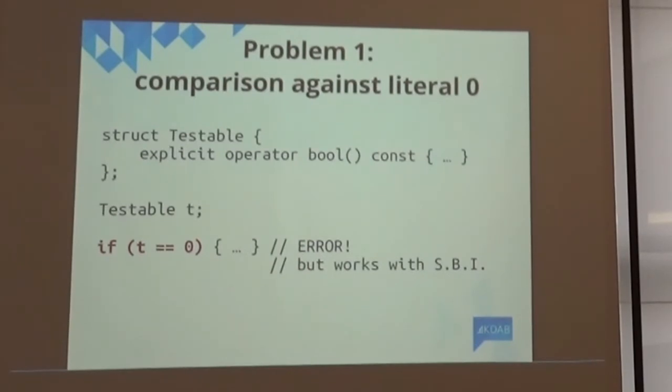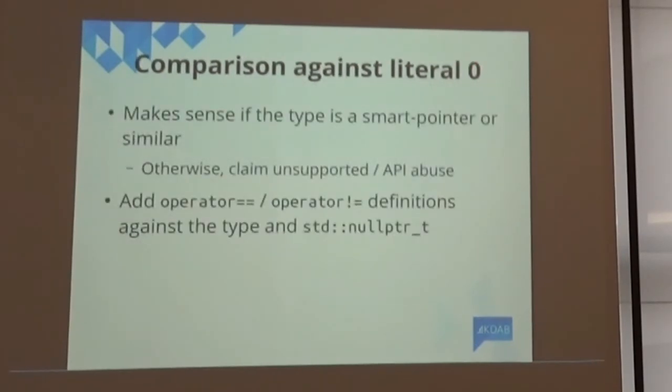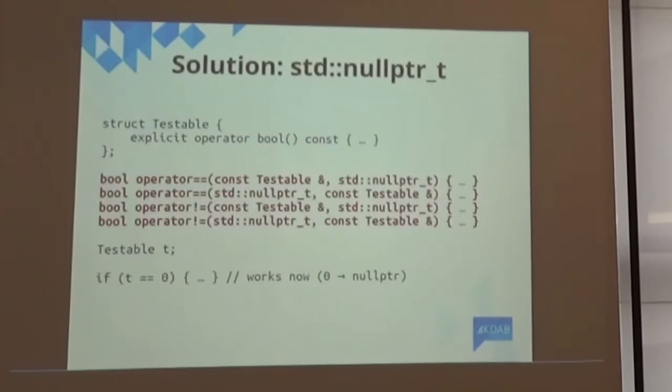So, the solution I found for this one was quite simple. Just add operator equals, operator different than, between that data type and null pointer t. If your data type is a smart pointer, you want this. And, by the way, in the standard, if you take a look at unique pointer, shared pointer, etc., you've got these operators defined for you. So, basically, add those, and now that test works, because zero can get converted into null pointer.